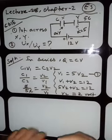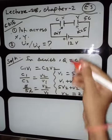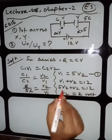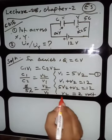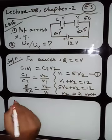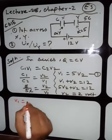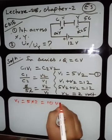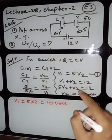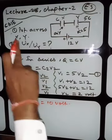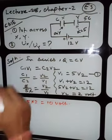If V2 = 2V, you can find V1 also. V1 = 5×V2 = 5×2 = 10V. So the first question is solved — you have found the potential across each capacitor.